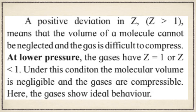To summarize the graph: a positive deviation in Z, that is Z greater than 1, means that the volume of a molecule cannot be neglected and the gas is difficult to compress. At low pressure, the gases have Z equal to 1 or Z less than 1. Under this condition, the molecular volume is negligible and the gases are compressible, behaving ideally when Z equals 1.